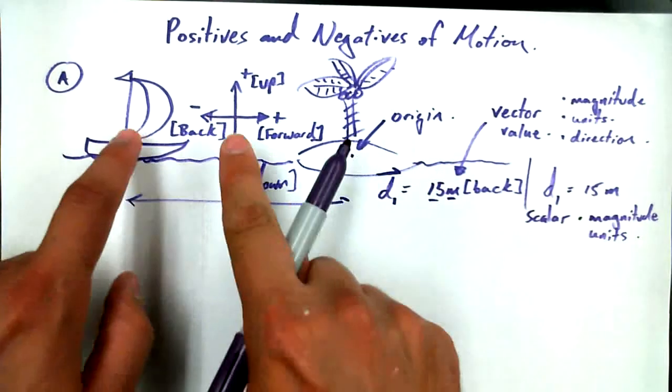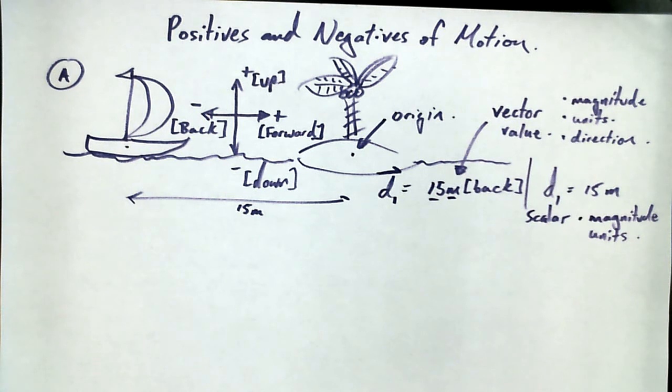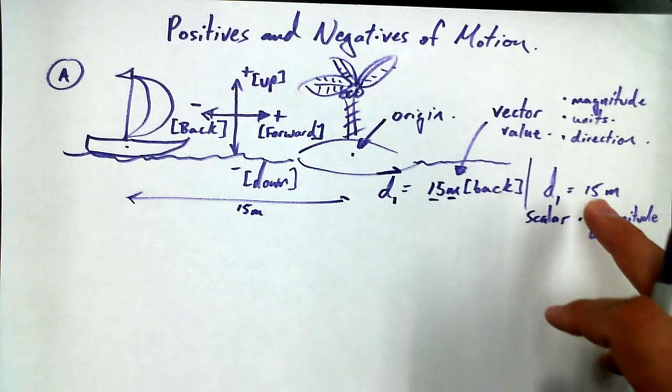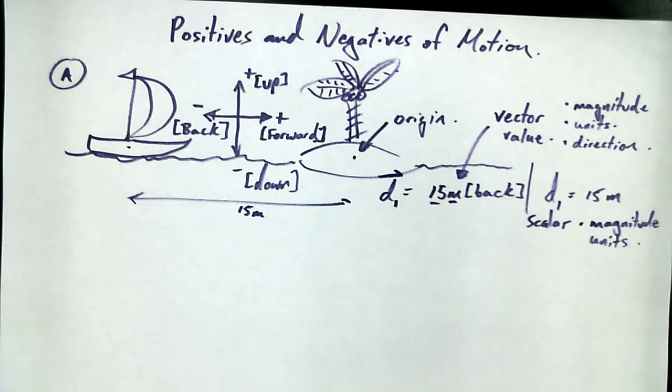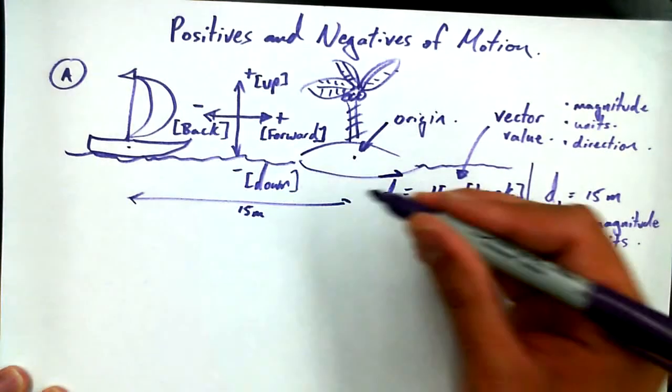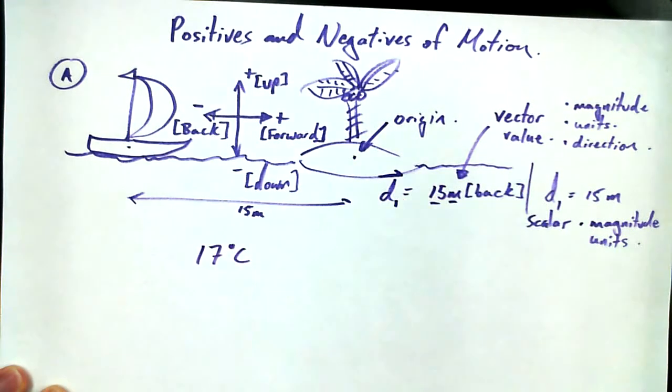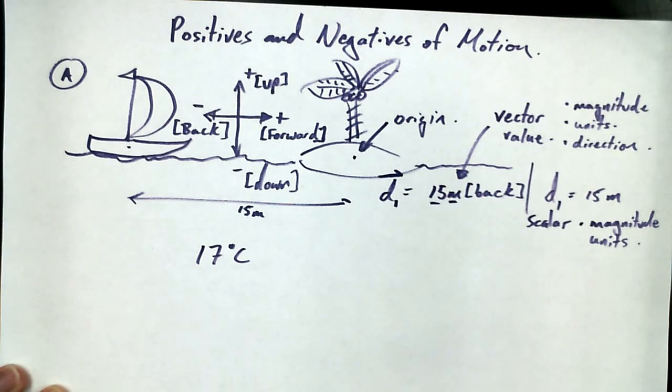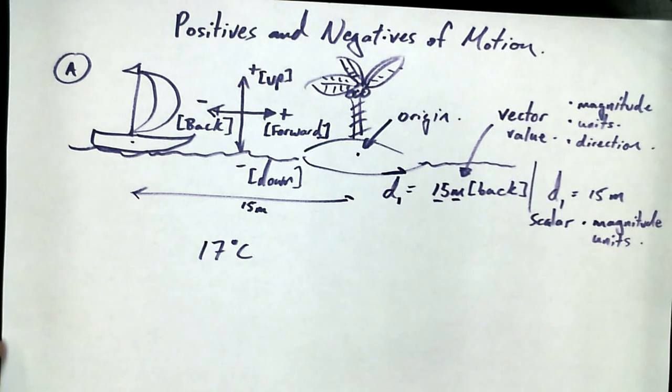In both of these situations, I'm talking about the same scenario. But I want to bring up another scalar that doesn't have a length associated with it. Like 15 meters is a length measurement. So I want to throw out some other scalars. You see if you can pick up why they're scalars. 17 degrees Celsius. Is that a scalar? And why so if it is? Because it has a magnitude and units, but it's not the direction.